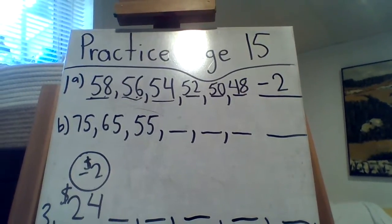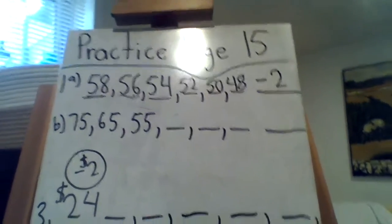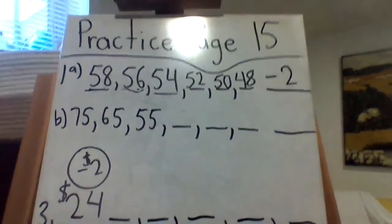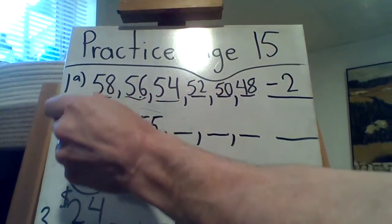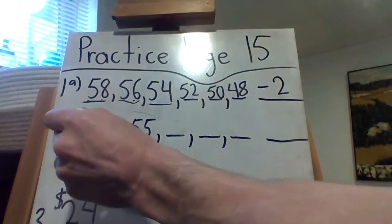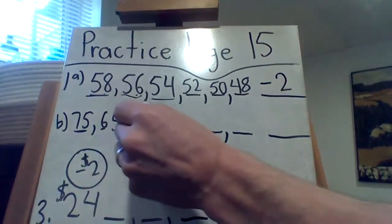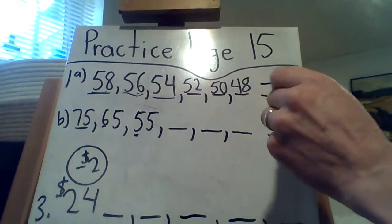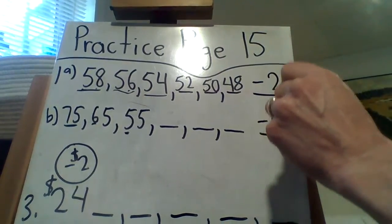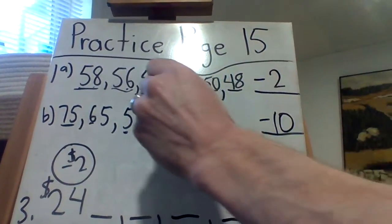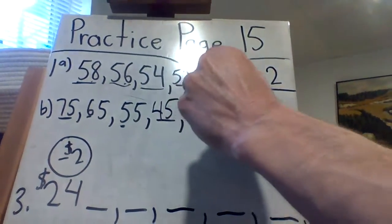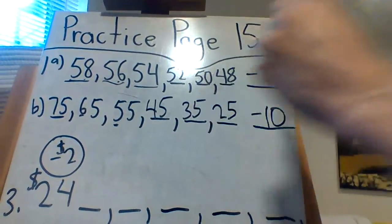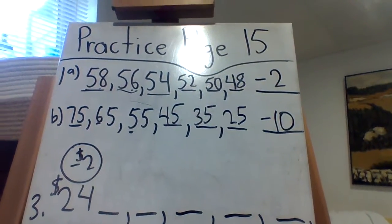B: 75, 65, 55, 45, 35, 25. Okay, so we're obviously starting with 75, taking 10 away to 65, taking another 10 away to 55, so we're subtracting 10: 45, 35, 25, 15, 5. You get the idea.